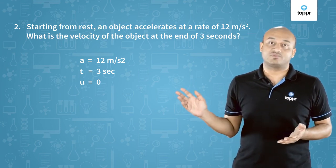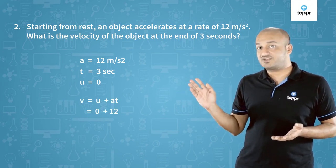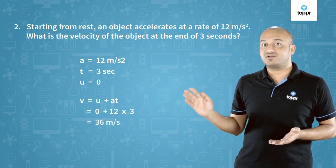So let's solve this problem. We'll use the first equation of motion v = u + at. U is 0, a is 12, t is 3. So the answer comes out to be 36 meter per second.